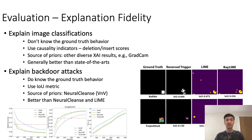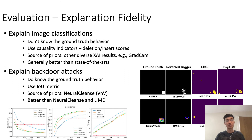We study explanation fidelity in two scenarios. First, we try to explain an image classification problem. In this case, we don't know the ground truth behavior of the underlying machine learning model, so we use causality indicators like delete and insertion scores. The source of prior knowledge is obtained from other diverse XAI results — in our case, we use the Grad-CAM results. Thanks to these diverse XAI priors, BEI LIME results are better than other state-of-the-art methods like SHAP, LIME, and Grad-CAM.